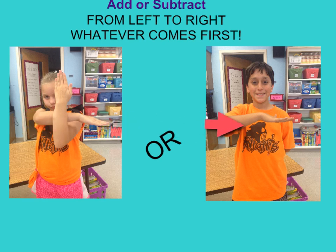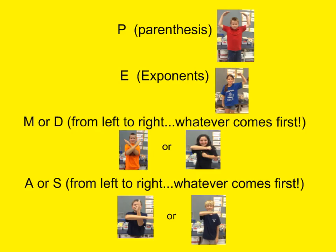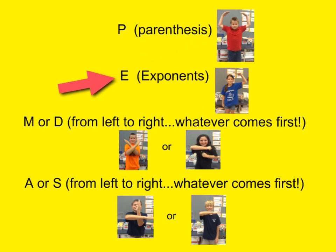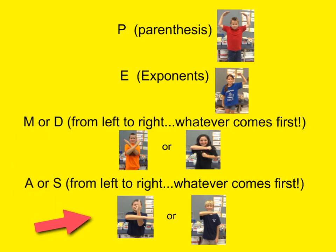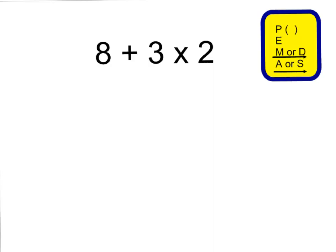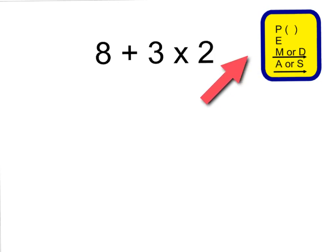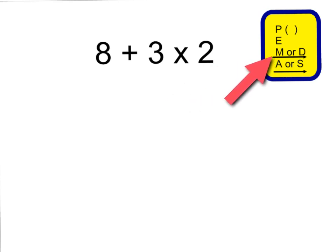We'll be doing the hand motions in class tomorrow too, so you'll get really good at it. Let's review. First of all, what you always want to do is what's inside parentheses first. Then, if you have any exponents, you do those next. Then, from left to right, you're going to multiply or divide whatever comes first in your equation. Finally, after you've done your multiplying and dividing, then you can do your adding or subtracting. I made this little chart right up here as a reminder — parentheses first, then exponents, then multiply or divide left to right, and then addition or subtraction last.